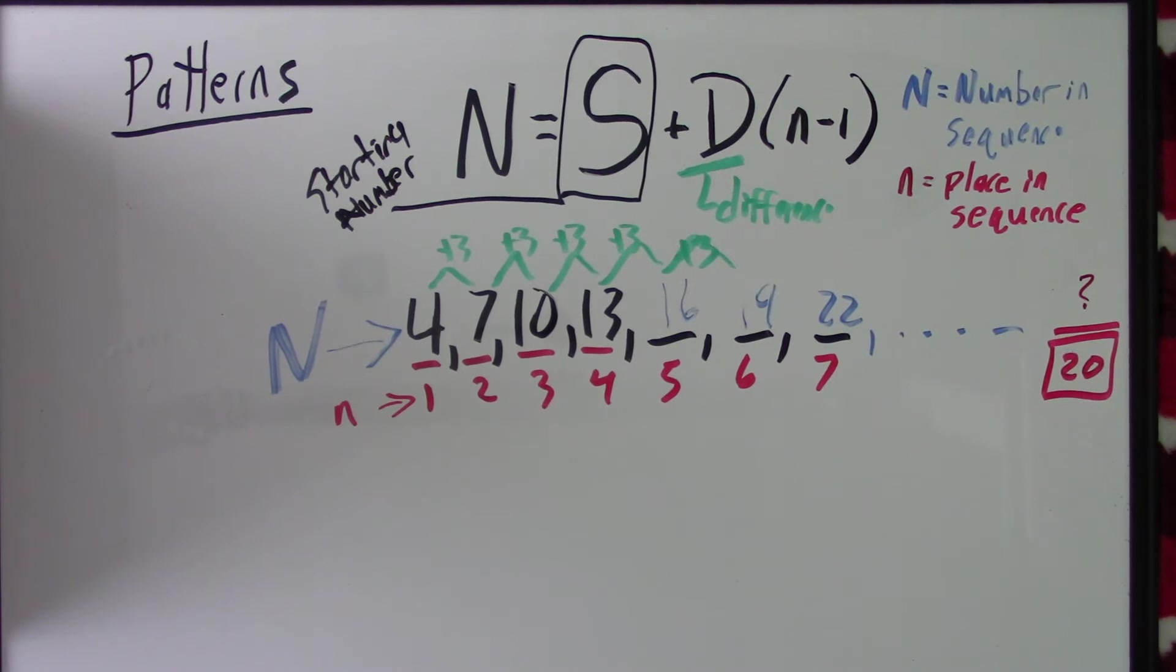And your S is your starting number. So, this formula, N equals S plus D times n minus 1, should kind of make sense of exactly what we're doing. We're starting at 4. We're adding 3 over and over and over and over again. So, repeated addition is multiplication.